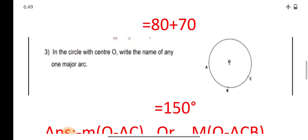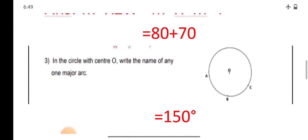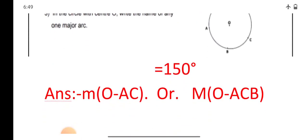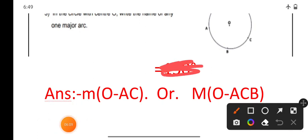Question number 3: In a circle with center O, write the name of any one major arc. The answer is major arc OAC or major arc OACB — that is the major arc of the circle.